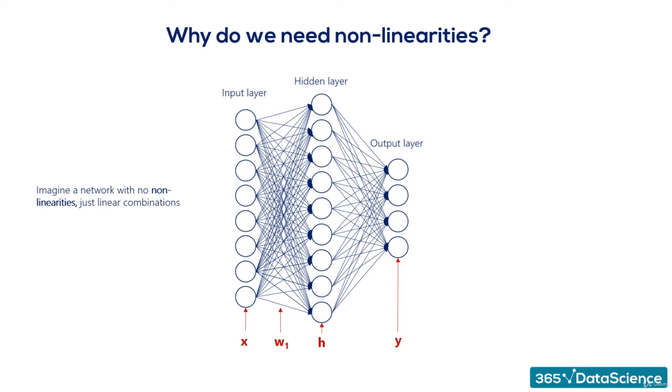Imagine we have a single hidden layer and there are no non-linearities, so our picture looks this way. There are 8 input nodes, 9 hidden nodes in the hidden layer, and 4 output nodes.